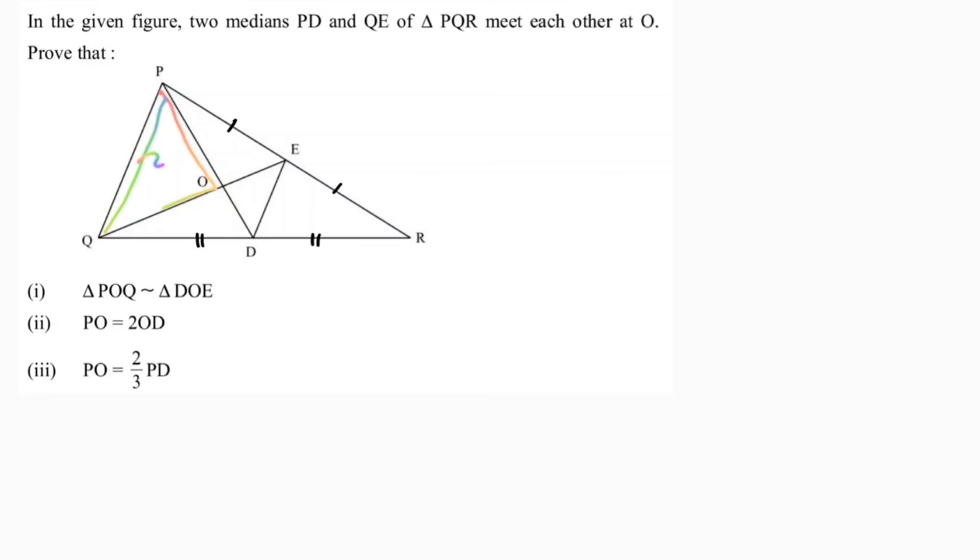To prove this similarity, I already have vertically opposite angles, so we need one more angle. Since we don't have side information, I'll use that E is the midpoint of PR and D is the midpoint of QR. I'll take triangle PRQ.